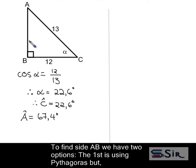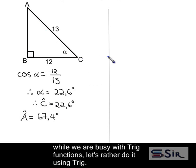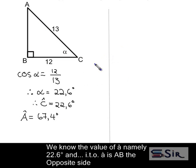To find the length of side AB, we have two options. The first is using Pythagoras. But, while we are busy with trig functions, let's rather use trig functions to do this. We know the value of alpha, namely 22.6 degrees, and in terms of alpha, AB is the opposite side.